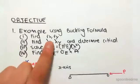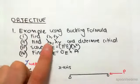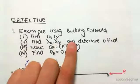We're going to be doing this by finding rx and ry, the radius of gyration, the slenderness ratio x and y, and we're going to see which one's more critical.